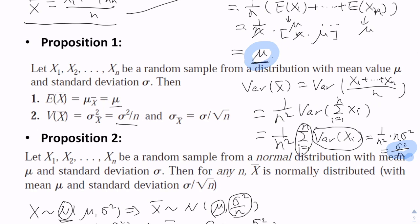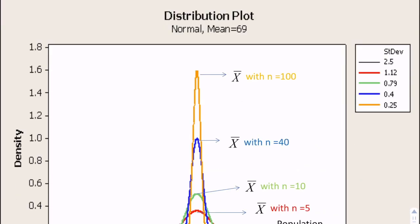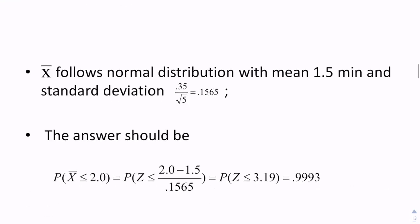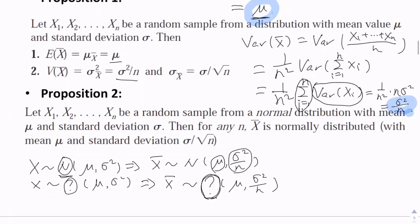Even if we do not know the original distribution, some people guess we can still determine the exact distribution name of the sample mean x-bar. That is our initial guess going forward.